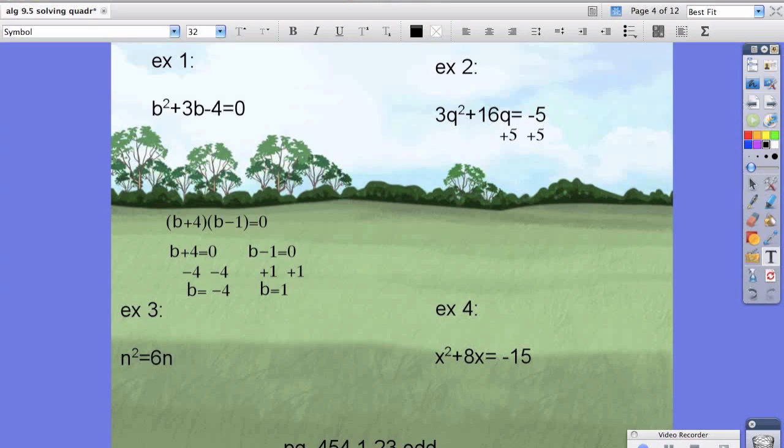And we would get 3q squared plus 16q plus 5 equals 0. Now we're supposed to factor that. That would be 3q plus 1, and q plus 5 equals 0.